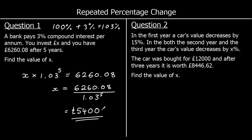So if we start with £5,400 and add on 3% every year for five years, we get to £6,260.08.